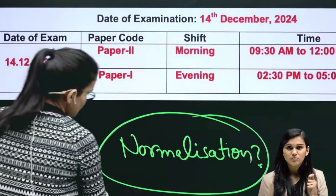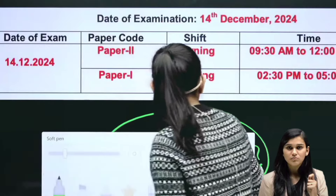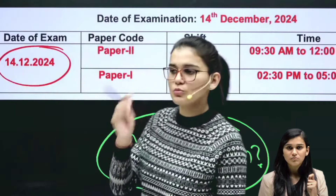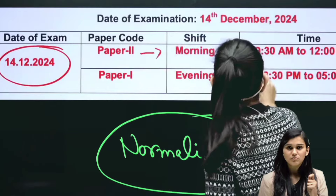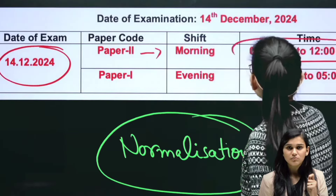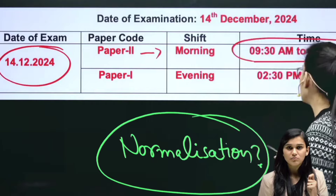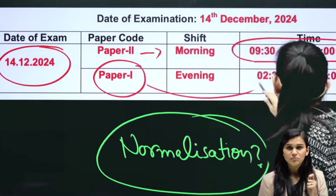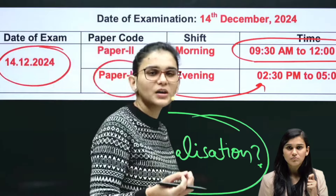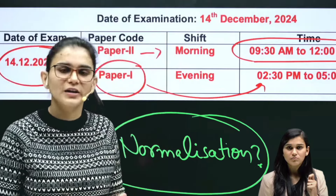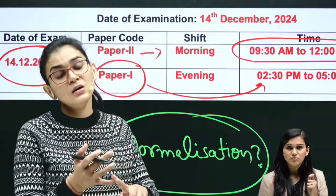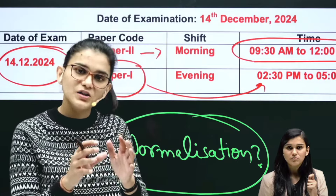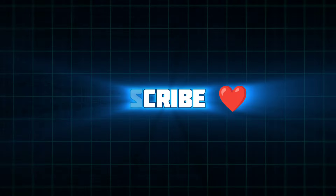The timing is the same. In some years, Paper 2 has been held in the morning shift and Paper 1 in the evening shift, up to around 5:00. The final timing will be confirmed about 2 days before the exam, along with your city — though not the exact school where the exam will take place.